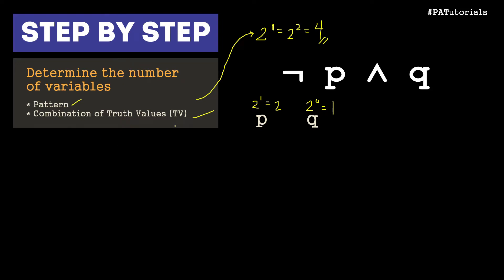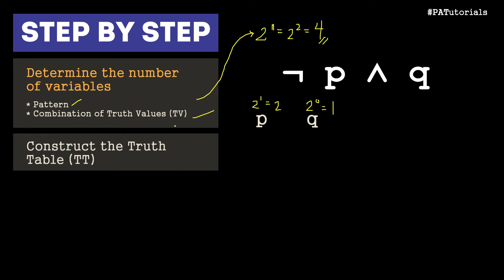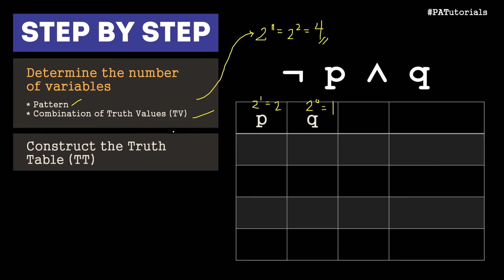The next step is to construct the truth table. Since P has a pattern of 2, that means we have two false and two true. While Q has a pattern of 1, that means we have alternating false and true — one false, one true, one false, one true.